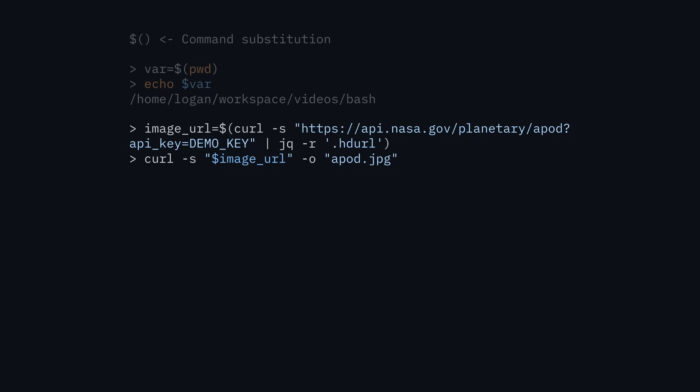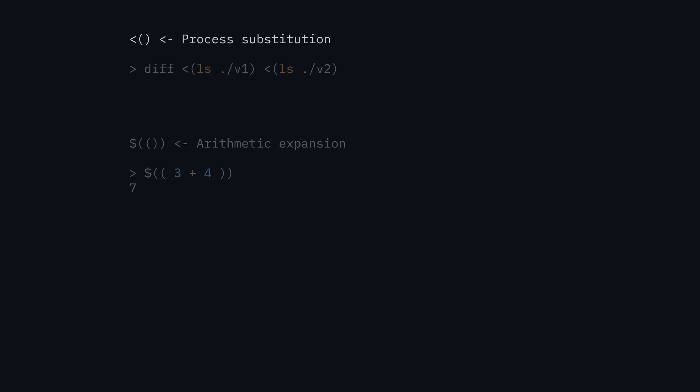Here's a more interesting example where you first fetch from an API to get a JSON response, then use jq to extract a value. The command substitution takes the final output, so image_url will just be the literal URL from the jq command, which you can then use to curl that URL. There's also process substitution, where you treat the output of a command like a file, using less-than and parentheses syntax — for instance, comparing two ls outputs with diff as if they were files. And there's arithmetic expansion with double parentheses, where you can run mathematical operations, since just running three plus four in the shell treats three as a command.